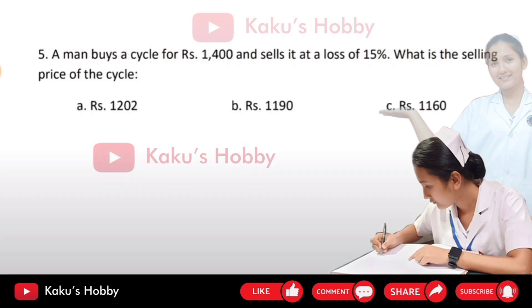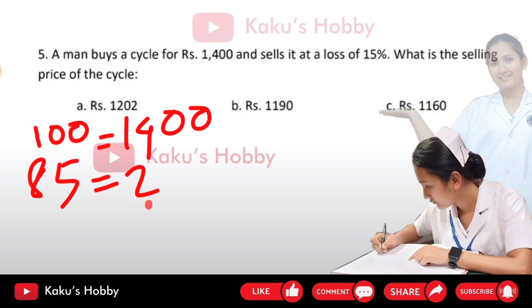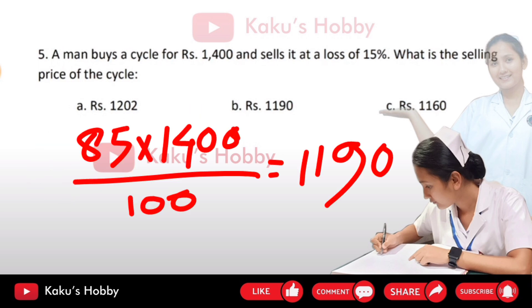Question number 5: a man buys a cycle for Rs.1,400 and sells it at a loss of 15%. What is the selling price? Since we have a 15% loss, we calculate 85% of Rs.1,400 to find the selling price.